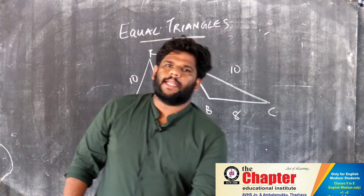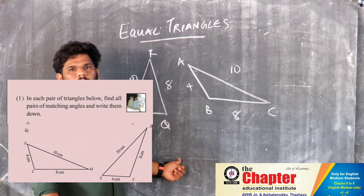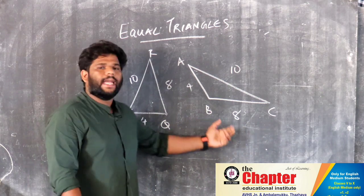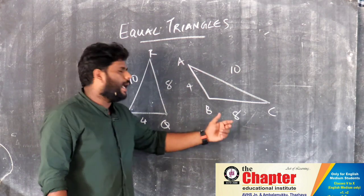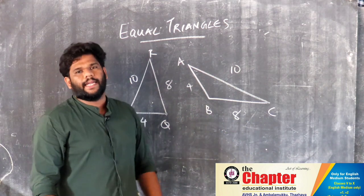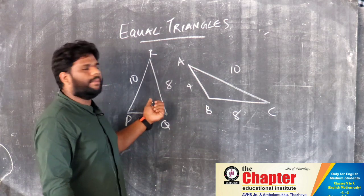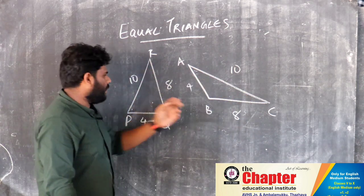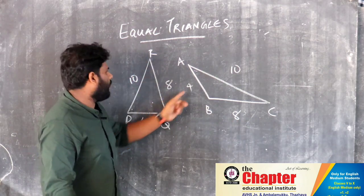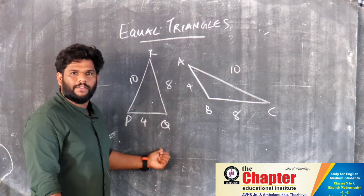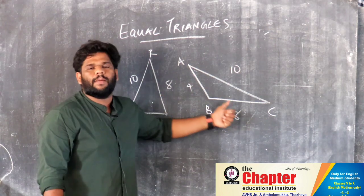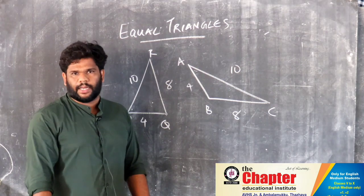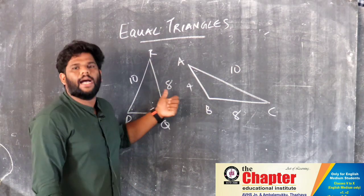I will ask you about this question. How do you show the two triangles ABC and PQR are equal? AC is 10 cm, PR is 10 cm. BC is 8 cm, QR is 8 cm. AB is 4 cm, PQ is 4 cm. These are the two triangles. The three sides are equal to the opposite angles.